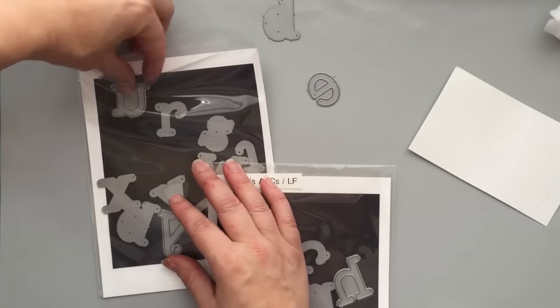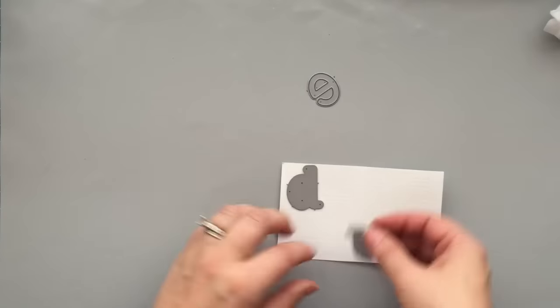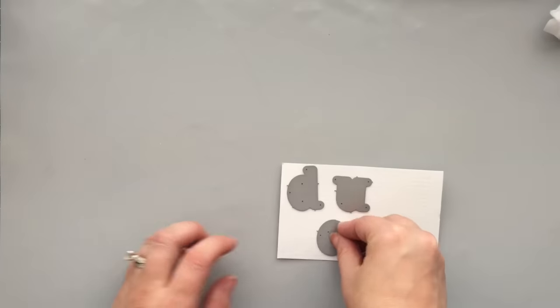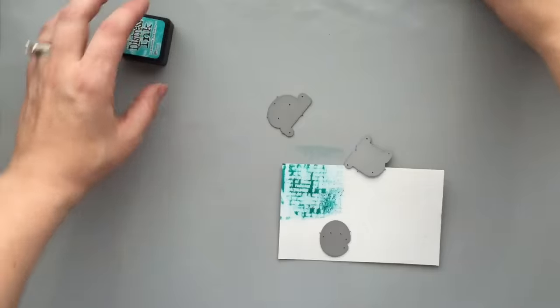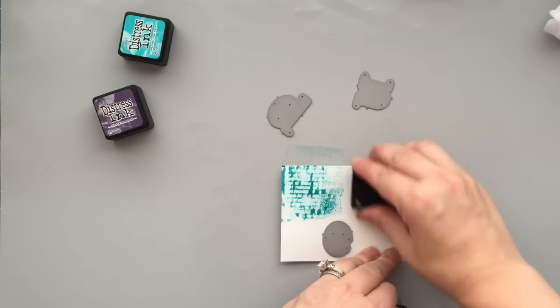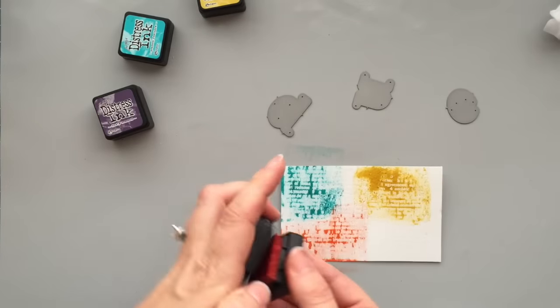These are some large alphabet dies by Lawn Fawn called Louie's ABCs. I love them because I love the size. I think they're fantastic. I'm just placing them on my card to make sure I have enough room, and then I'm going in with the Distress Ink Minis. If you don't have the minis, regular pads will work just fine. Any ink pad will work for this. I'm just using Distress Inks because I like the colors.